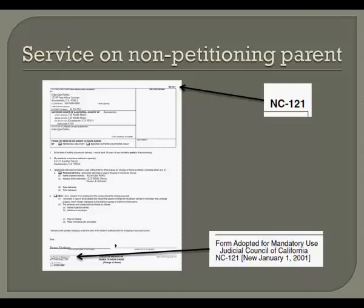If the parent lives in California, this service must be done by personal service, meaning that someone over the age of 18 who is not a party to this case must deliver a copy of the order to show cause to that parent and must indicate who was served, the address where service took place, the date it was delivered, and the time on the form. If the other parent lives outside of California, service may be done by first-class mail with postage prepaid with the return receipt requested. In any event, the service must be done by someone over the age of 18 who is not a party to this case.